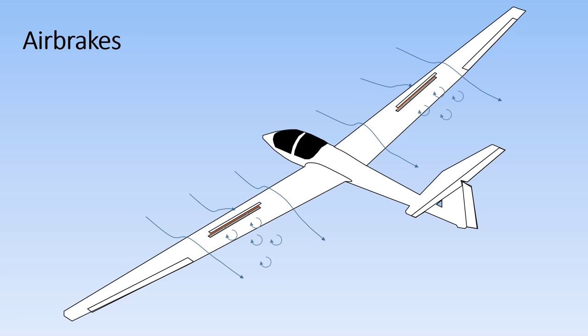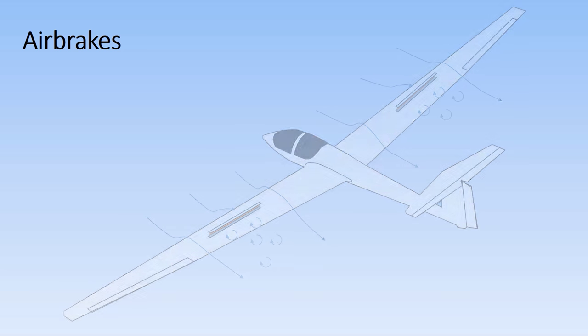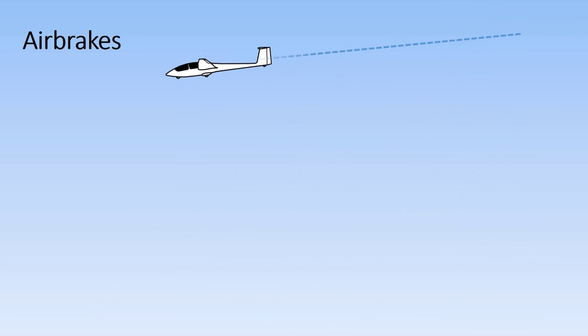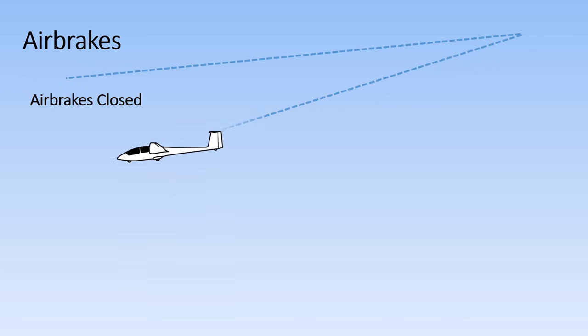When open, the air brakes disrupt airflow over the wing, reducing the amount of lift they produce. Opening the air brakes further increases the rate of descent.